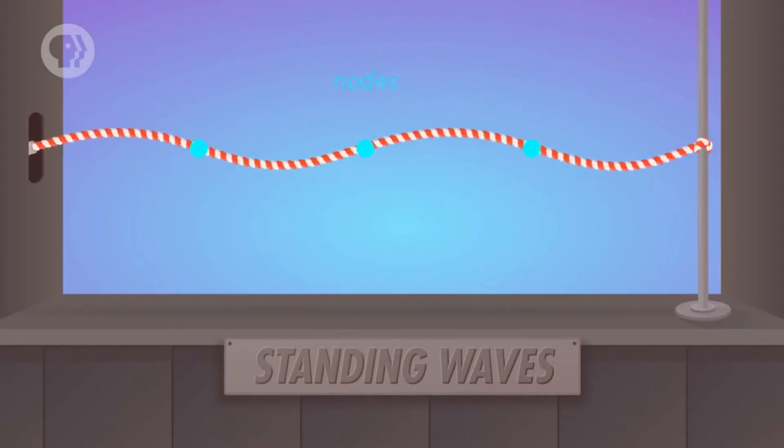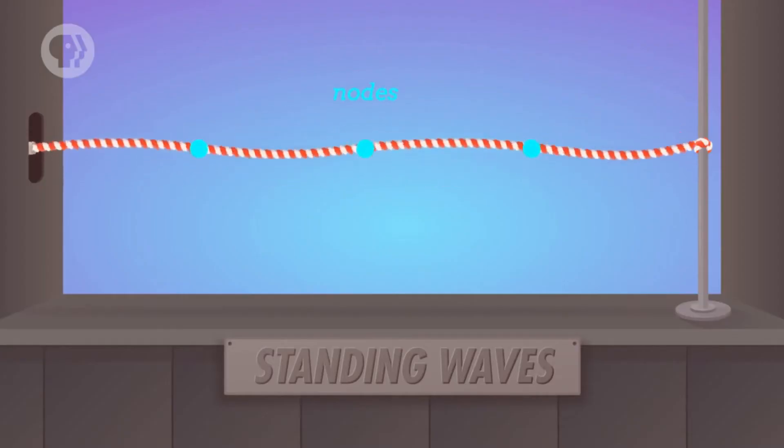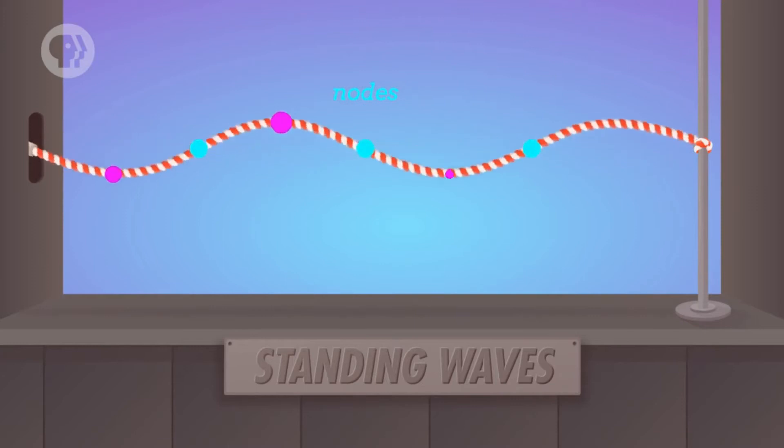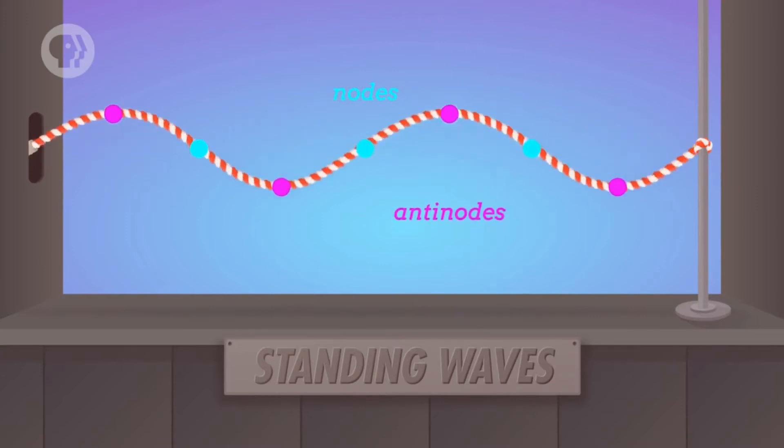A basic standing wave is composed of two parts: motionless parts, called nodes, and moving parts, called antinodes.